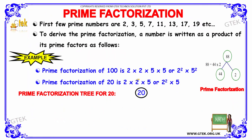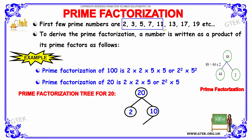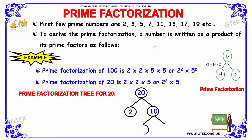Let us see a few prime numbers: 2, 3, 5, 7, 11, 13, 17, 19 and it goes on. To derive a prime factorization, a number is written as the product of prime factors.